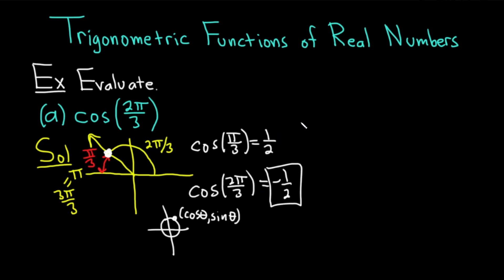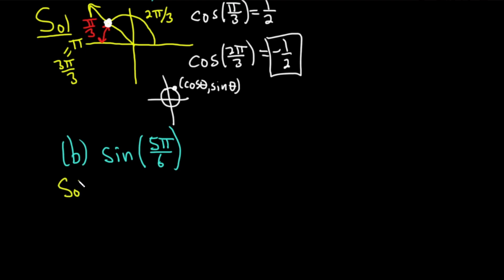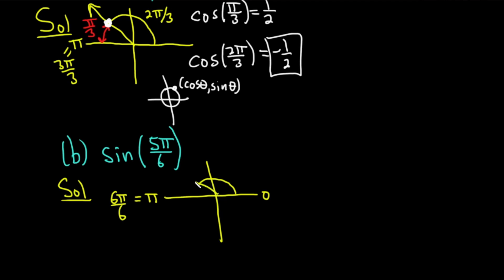Let's do another example just to make sure you understand this, because this is one of the hardest things in trig for people to learn and it just takes a lot of practice. In this next example, we have the sine of 5 pi over 6. So just like before, we'll start by drawing a rough sketch. Here's pi, and here's 0. And 5 pi over 6 — if you think of pi as 6 pi over 6, then 5 pi over 6 is a little bit smaller, something like this. And then the reference number, drawn here in red, is pi over 6, because that's what's missing to get from 5 pi over 6 to 6 pi over 6.